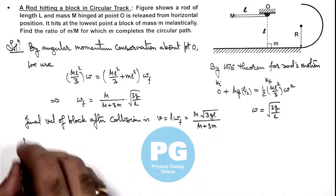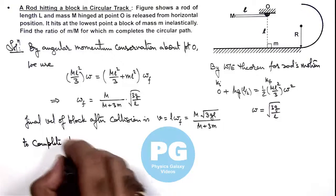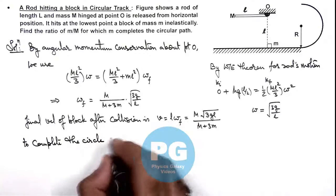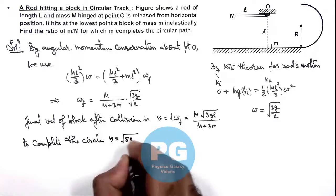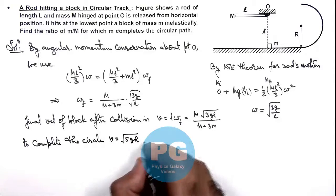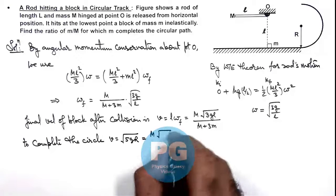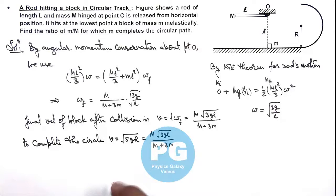And to complete the circle, this velocity should be equal to root of 5gR. So if we equate the two, then we can see this should be M root of 3gL divided by M plus thrice of small m. If we simplify this relation.